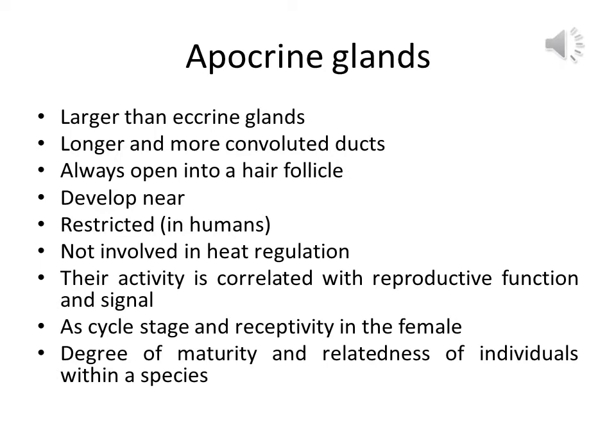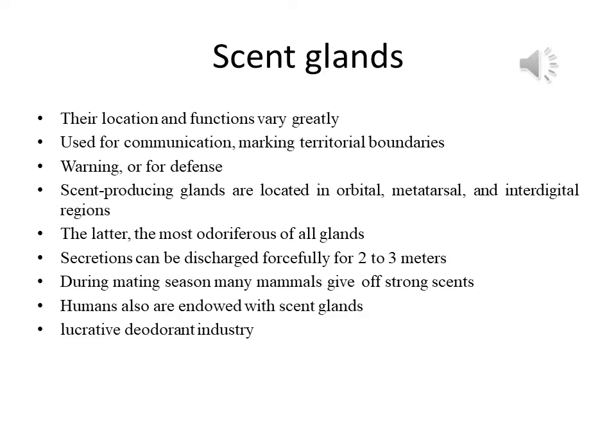Apocrine glands develop near puberty and in humans are restricted to the armpits, breast, tarsus, scrotum and external auditory canals. Apocrine glands are widespread in other mammals and are used for marking territorial boundaries, for warning, or for defense.